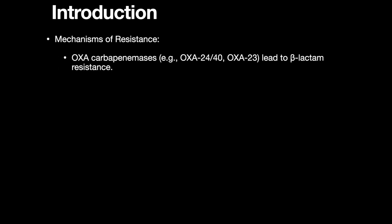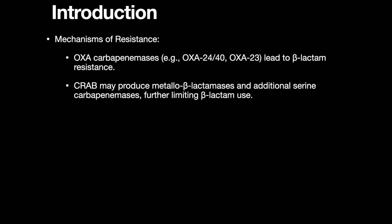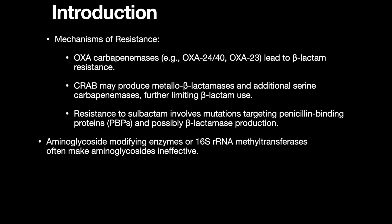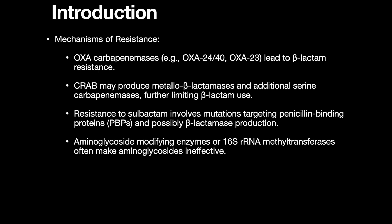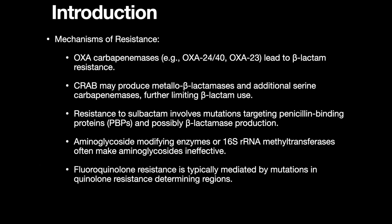The mechanisms of resistance include oxacarbapenemases — OXA-24/40 or OXA-23 — leading to beta-lactam resistance. CRAB may also produce metallo-beta-lactamases and additional serine carbapenemases, further limiting beta-lactam usage. Resistance to sulbactam involves mutations targeting the PBPs and possibly beta-lactamase production. Aminoglycoside-modifying enzymes or 16S rRNA methyltransferases often render aminoglycosides ineffective. Fluoroquinolone resistance is typically mediated by mutations in the quinolone resistance-determining regions.